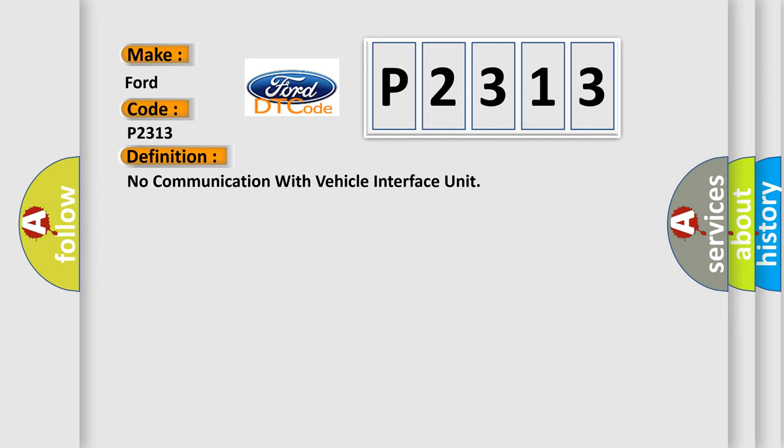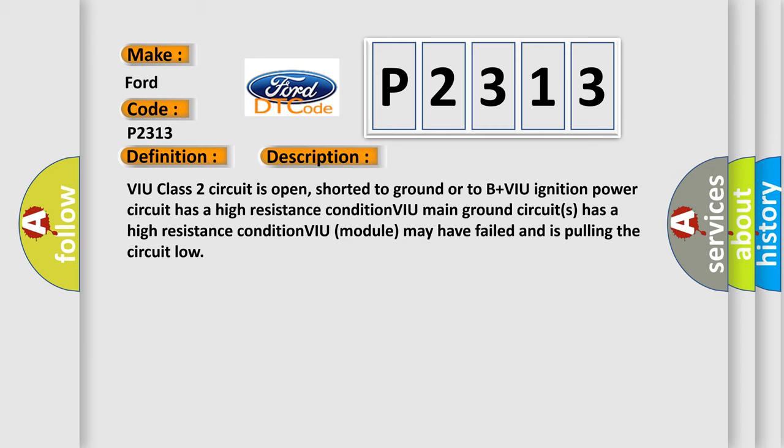And now this is a short description of this DTC code. VIU class 2 circuit is open, shorted to ground or to B+ VIU ignition power circuit has a high resistance condition. VIU main ground circuits has a high resistance condition. VIU module may have failed and is pulling the circuit low.